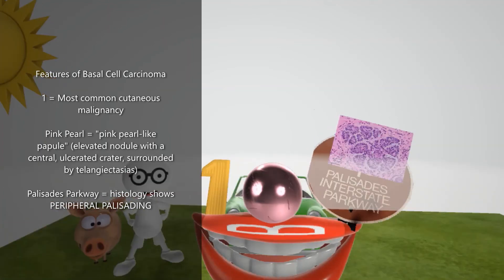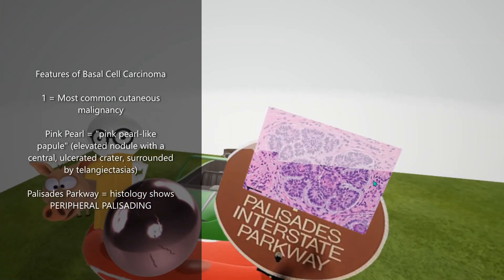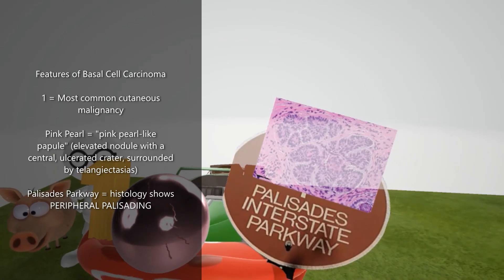Next, we look at this histologic picture of the peripheral palisading histology of basal cell carcinoma, which shows nodules of basal cells with peripheral palisading. You see the basal cells over here with the palisading. To help us remember this, we have a sign of the Palisades Parkway right under it: Palisades Parkway for peripheral palisading.